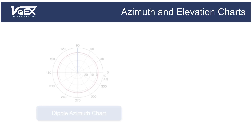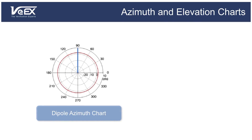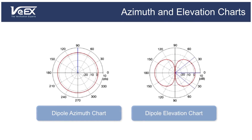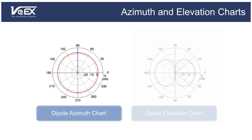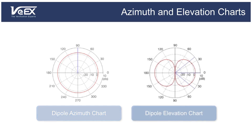Antenna manufacturers provide an azimuth and an elevation chart to help visualize the radiation pattern of the antenna. The azimuth chart shows the radiation pattern as if you were slicing through the 3D shape horizontally — for our donut-shaped dipole antenna, the resulting azimuth shape is a circle. The elevation chart shows the radiation pattern as if you were slicing through the 3D shape vertically, which makes two lobes around the central point.